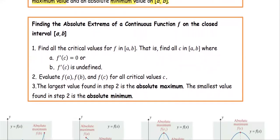The procedure to find the absolute max, absolute min, or the absolute extrema on the closed interval is as follows. Step one: find all critical values on the open interval (a, b).